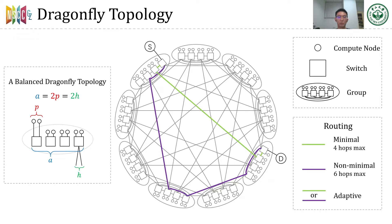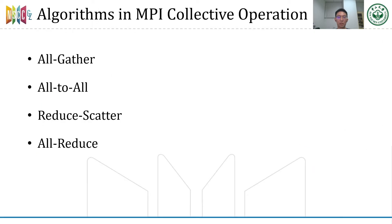The green line shows an example of minimal routing, which contains only one global link and traverses at most four hops. The purple line shows an example of non-minimal routing, which randomly selects a group to take a detour, containing two global links and traversing at most six hops. To avoid congestion in the network, adaptive routing can be used to choose a minimal path or non-minimal path adaptively. I will introduce some algorithms used in open-source MPI implementations for these collective operations. There are well-optimized algorithms for broadcast and reduce in Dragonfly Topology, so we focus on the rest.